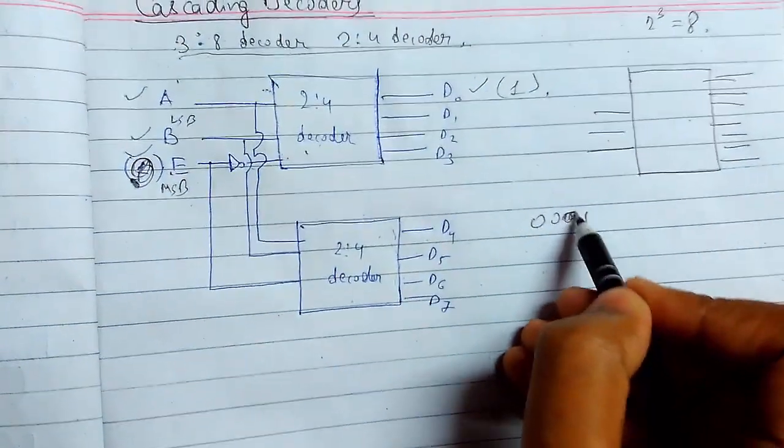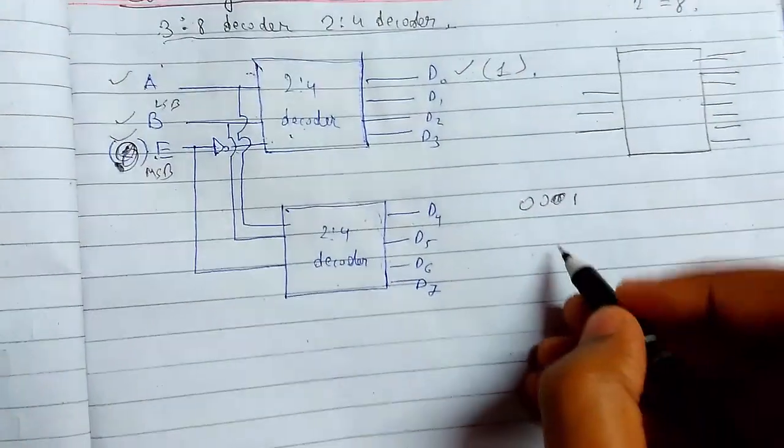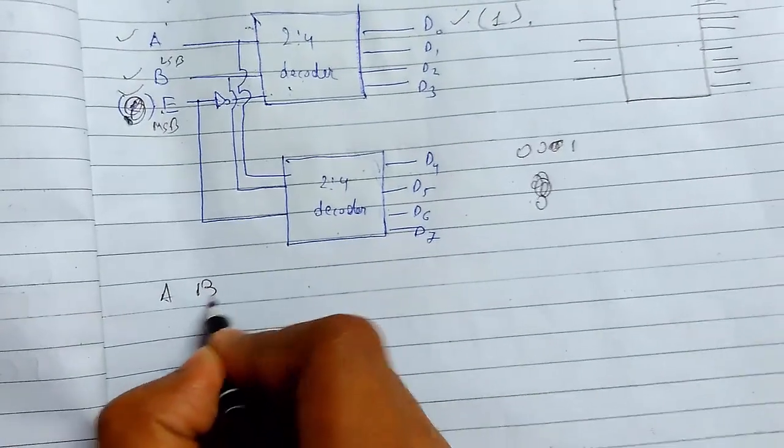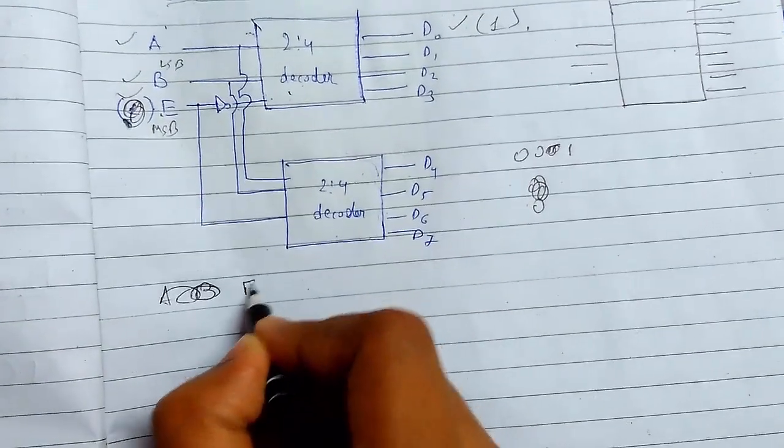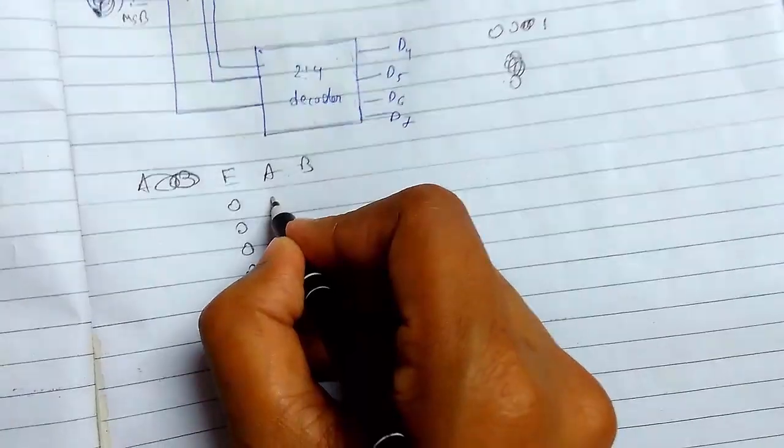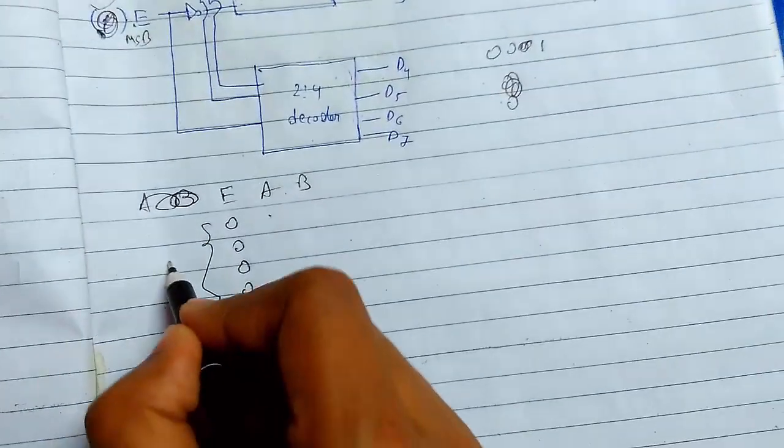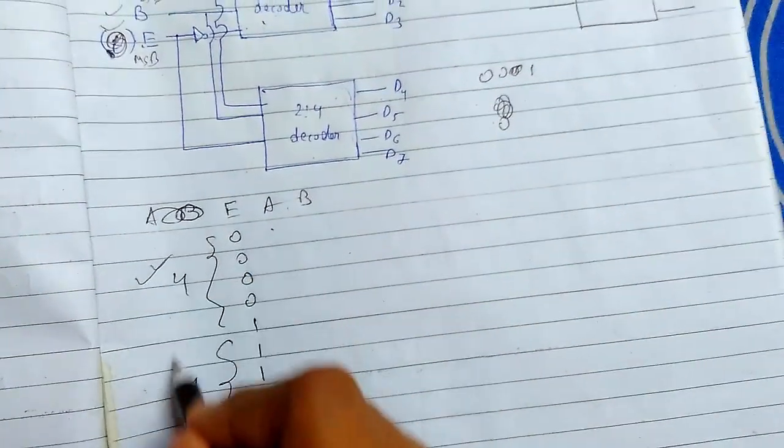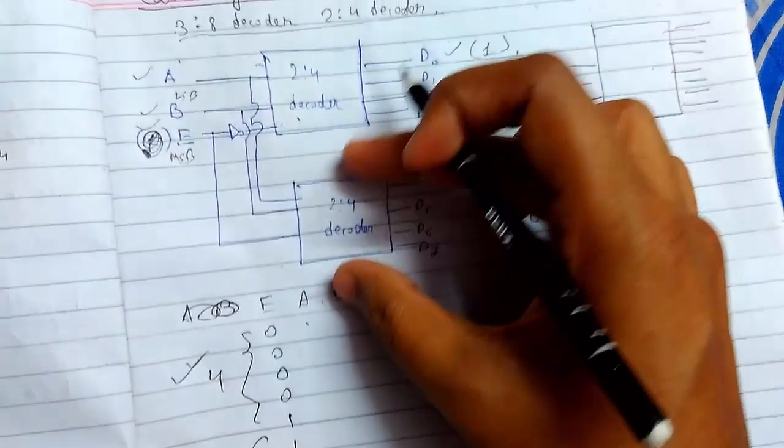When we observe the truth table we can see that for MSB E, A, B, for first 4 cases and the last 4 cases these are 0 here and here it is 1. So we can regulate this.